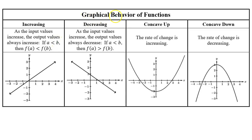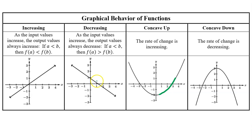Now let's talk about the graphical behavior of functions. If a function is increasing, it will be rising from left to right. If it is decreasing, it will be falling from left to right. If a function is concave up, it forms a U shape or bowl shape. If it's concave down, it forms an umbrella shape. For concavity, the function doesn't need to make a complete U or umbrella — any part of those shapes qualifies.